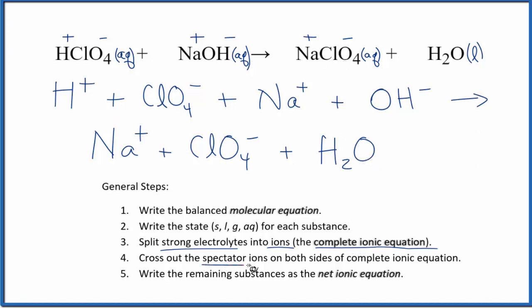So now we can cross out spectator ions. These appear on both sides, they don't change. So we have H plus here, but in the products we don't, so we can't cross that out. ClO4 minus, we have it here, and in the products here, we can cross it out. Na plus, right here, and here again, cross it out. And the OH minus, we don't have that in the products. So our net ionic equation, that's what we have right now,